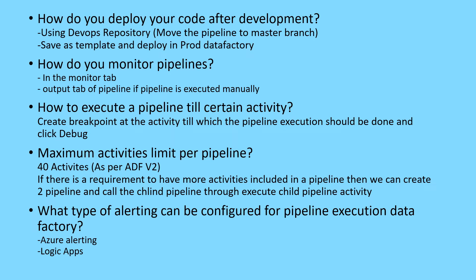The next question: how do you monitor pipelines in Azure Data Factory? When scheduled triggers, event-based triggers, or any triggers cause a pipeline to execute automatically, you can go to the Monitor tab to see all pipelines being executed. If you are manually executing a pipeline using debug or publish, you can go to the output tab of the pipeline to see its execution status. You can also check this in the Monitor tab.